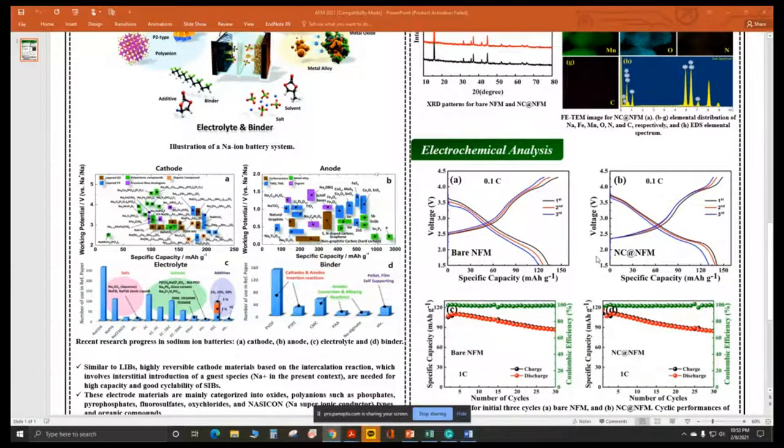To check the electrochemical performance of the NFM material, we made an electrode using 80% active material, 10% carbon material, and 10% PVDF. These were combined and ground for about 45 minutes and NMP was added to make a slurry to coat over aluminum foil. In electrochemical performance, the bare material gives about 135 mAh per gram at the first cycle. It decreased to 130 mAh per gram in the second cycle and faded to 120 mAh per gram by the third cycle.